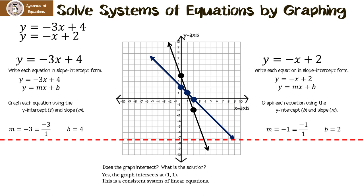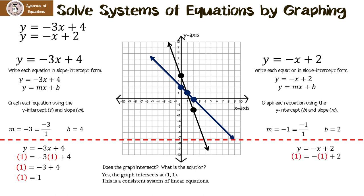Let me show you how the solution works. For y equals negative 3x plus 4, I plug in the point one, one: negative three times one is negative three, and negative three plus four is one. So one, one satisfies that equation. For y equals negative x plus 2, I substitute one, one: negative one plus two equals one. So the ordered pair one, one makes both equations true at the same time.